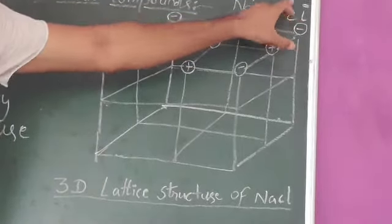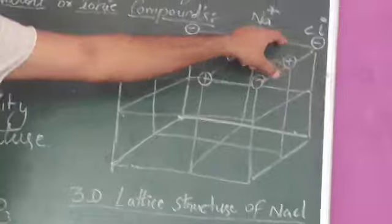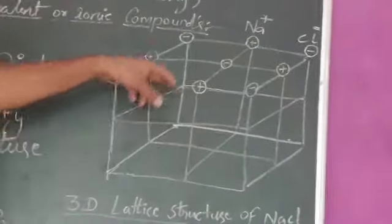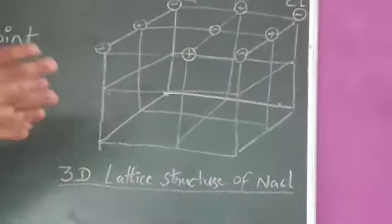Sodium is positive and chlorine is negative. They both form a bond and the opposite charges are connected in a lattice structure.